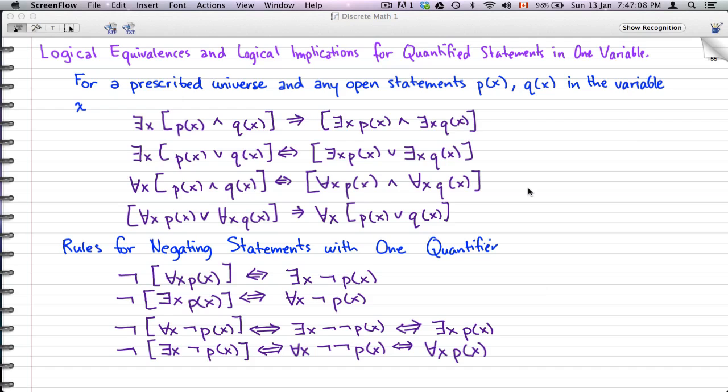Now what I want you to know is that this is not exactly important and you shouldn't really memorize this to begin with. For a prescribed universe and any open statements p(x), q(x) in the variable x, we have rules like: exists x [p(x) and q(x)] logically implies [exists x p(x)] and [exists x q(x)]; exists x [p(x) or q(x)] is biconditional to [exists x p(x)] or [exists x q(x)]. Here are some rules for negating statements with one quantifier, but this is not something you should really keep to heart.